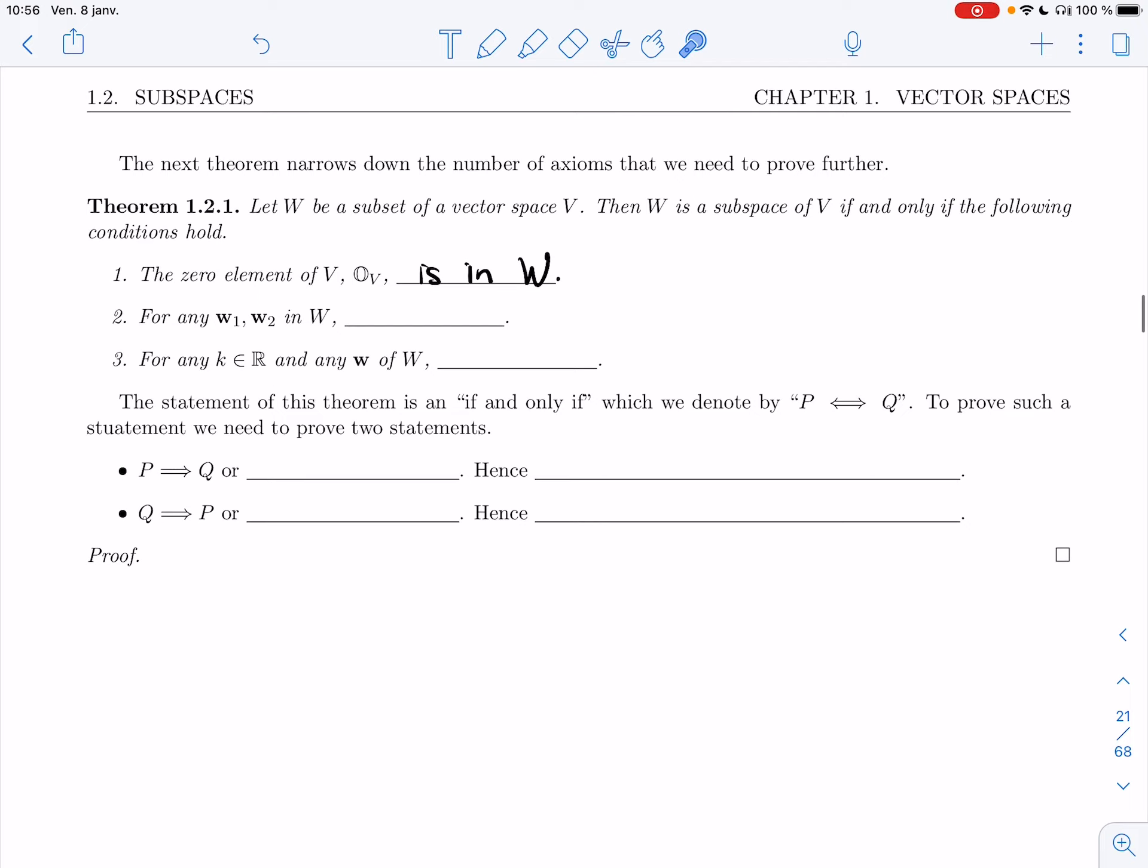Second, for any two elements w_1 and w_2 in W, the sum will also be inside W. And then for any k in R and any w in W, I need to get a new element, kw, which is still in the subset W.